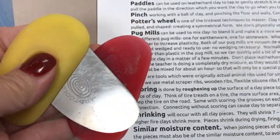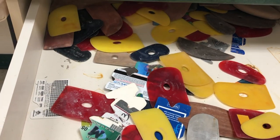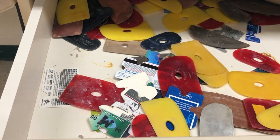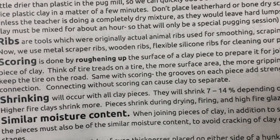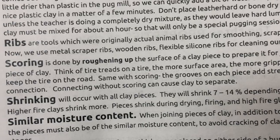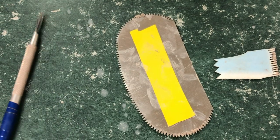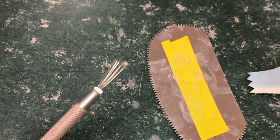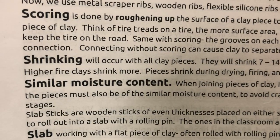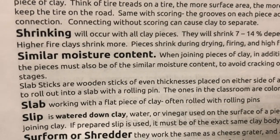Ribs come in different densities — some harder, some softer, some notched. Scoring is the roughening up of the clay surface when you're joining things. You can use various tools to score: the scoring rib or the scratch wire brush in the community tool bins. Remember that as clay loses its moisture, it will always shrink and become smaller. It also shrinks during a high-fire glaze firing as it changes a little bit more.